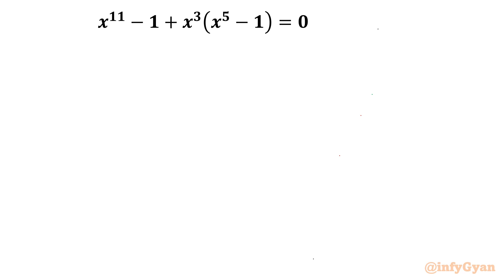Hello everyone, welcome to InfiJAN. In this very exciting video of Algebraic Challenging Equations, we are going to solve one degree-11 polynomial. The equation is x^11 minus 1 plus x^3 times (x^5 minus 1) equal to 0. So let us get started.